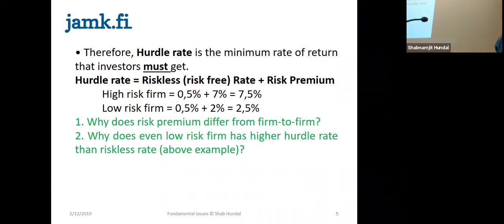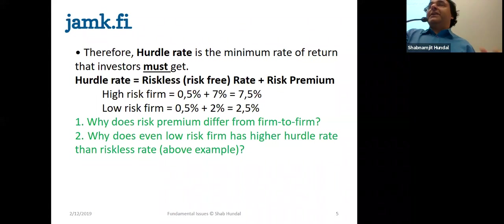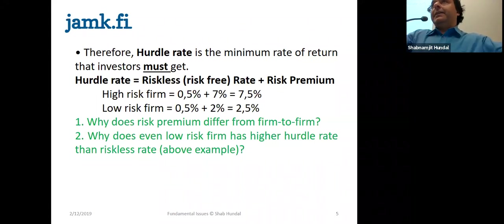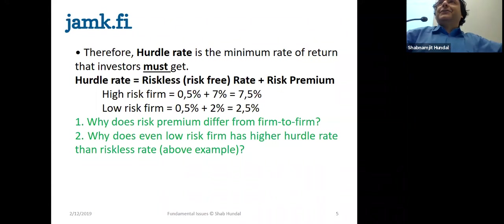Our conclusion based on this chart — for the last 100 years — is: higher the return when higher the risk. Even historically, based on the last 100 years, our concept is proved. Common stocks are the riskiest investment and they have the highest return, and the bills are the least risky and they have the least return.